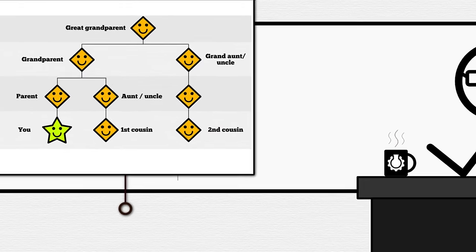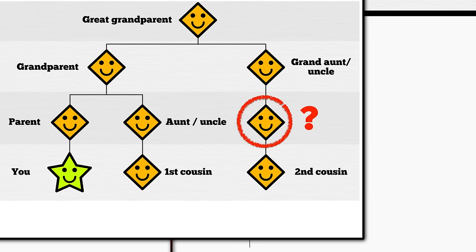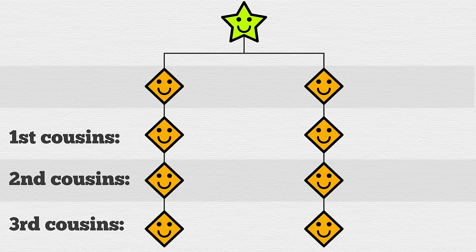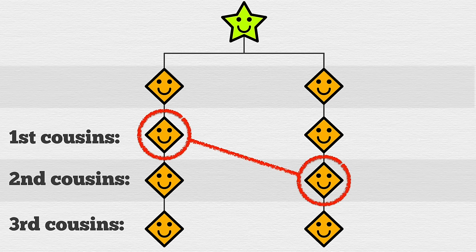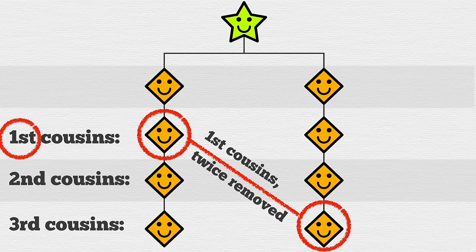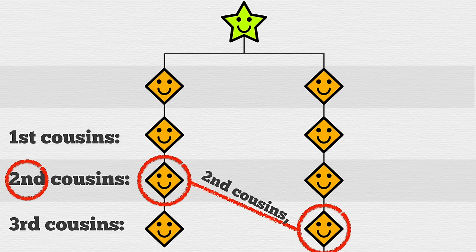Now, the once-removed thing. You may have noticed these cousins are all on the same level. Removed just describes how many generations apart people are. For example, start by taking the smaller cousin number — first cousins — and count the levels apart: once removed. These are first cousins twice removed, thrice removed. And these are second cousins once removed.